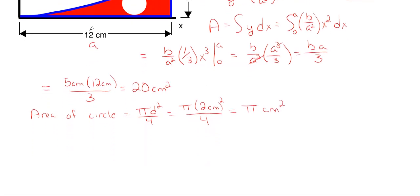All righty so the total area in red will be my 20 centimeters squared minus pi centimeters squared. If you want to leave it as an exact solution that would be your exact solution, or if you want to just go ahead and solve that out it gives you 16.86 centimeters squared.